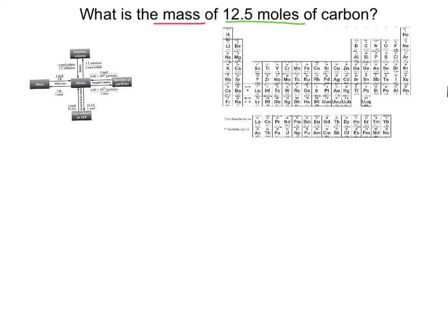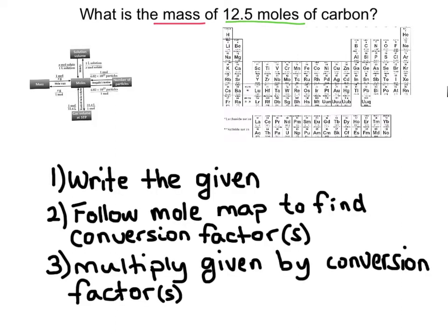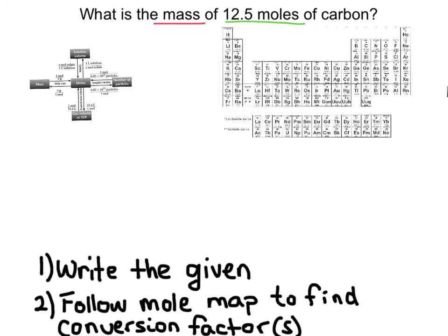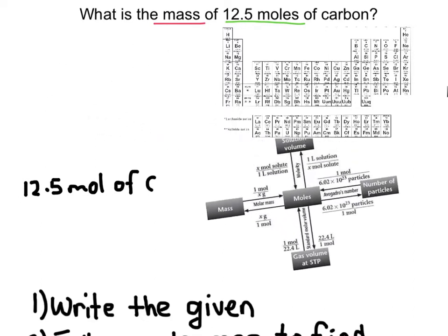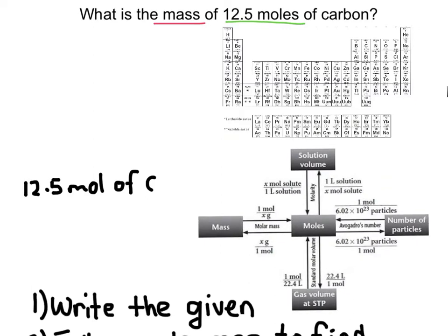These are the steps we are going to use. Anytime you are converting, follow these three steps and you will be able to do any conversion. Step one is to write down the given. I have underlined the given there in green. Then we are going to follow the mole map to find the conversion factor or factors, and multiply by those conversion factors. So let's start with step one. I am going to write down the given just as I see it: 12.5 moles of carbon. My given unit is in moles, so I am right here in the center of the mole map, and I want to get to mass.